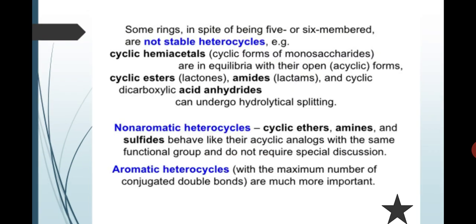Some rings of five or six membered rings are not stable heterocycles. Examples are cyclic hemiacetals. Cyclic forms of monosaccharides are in equilibrium with the open acyclic form, and cyclic esters lactones, amides lactones.